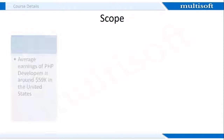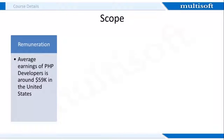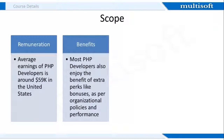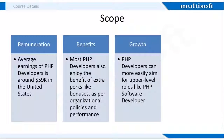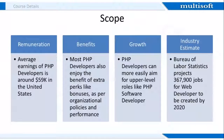Those who have expertise in PHP programming have huge benefits as their career progresses. The average earnings of PHP developers is around $59,000 in the United States. PHP developers are also subject to various employee benefits like bonuses and have higher chances of moving up in designation. Additionally, the Bureau of Labor Statistics projects 367,900 jobs for web developers to be created by 2020.